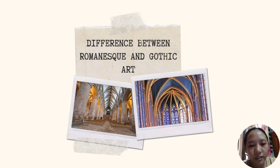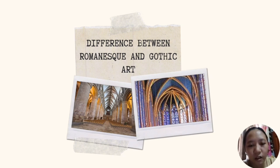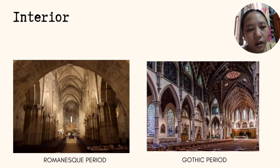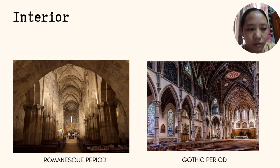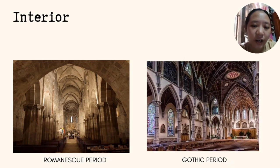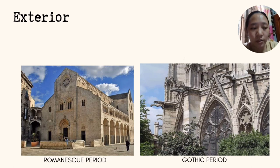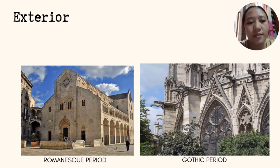The difference between Romanesque and Gothic art: in terms of the shape of arches, Romanesque architectural buildings have rounded arches while Gothic architecture buildings have pointed arches. Romanesque architectural buildings have small windows and fewer stained glasses, which results in a dark interior. Romanesque architecture has a minimal design on the exterior of the building, while Gothic architecture has gargoyles and other ornate decorations on the exterior.